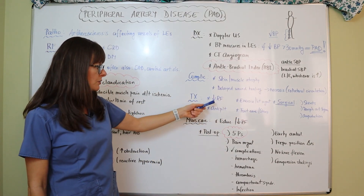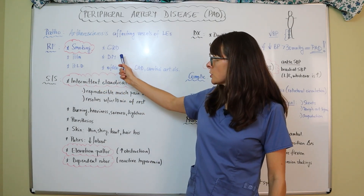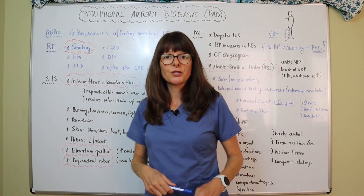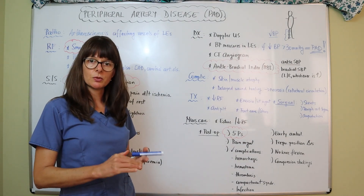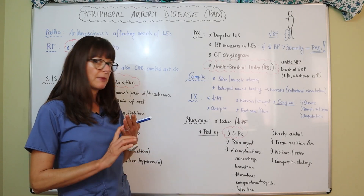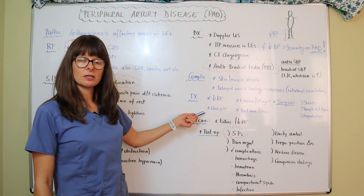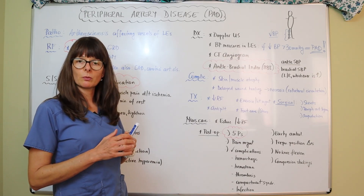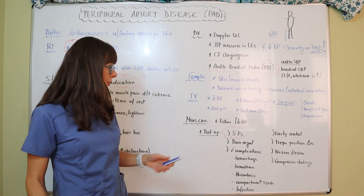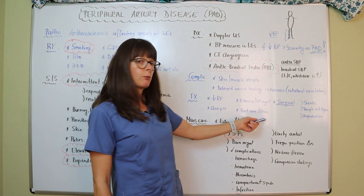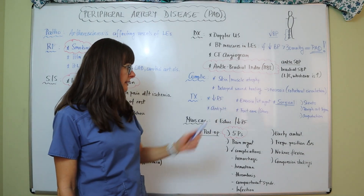Treatment for PAD focuses on decreasing risk factors. For patients with hypertension, smoking, high cholesterol, kidney issues, or diabetes, we counsel them on nutrition, weight management, smoking cessation, reducing lipid intake, and regular exercise. Many patients are placed on antiplatelet agents such as aspirin or Plavix to reduce clot formation in the obstructed or narrowed arteries. We also focus on foot care and ensuring properly fitting shoes to prevent wounds on the lower extremities that may have trouble healing.